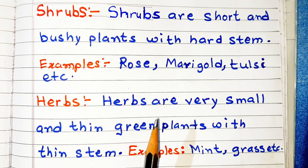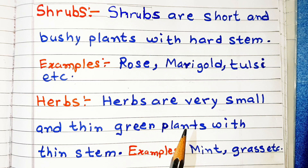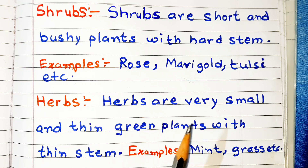Herbs are very small and thin green plants with a thin stem. Examples: mint, grass, etc.